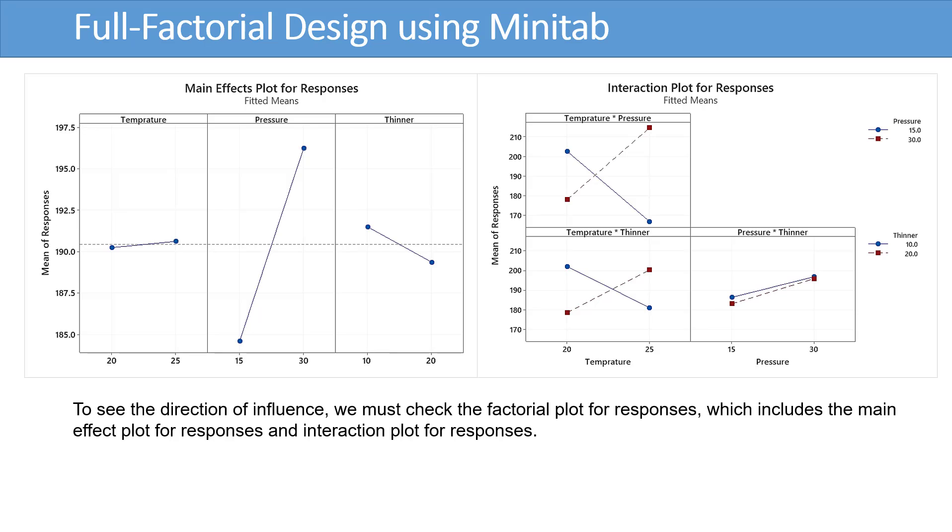To see the direction of influence, we must check the factorial plot for the response which includes the main effect plot for the response and interaction plot for the response.